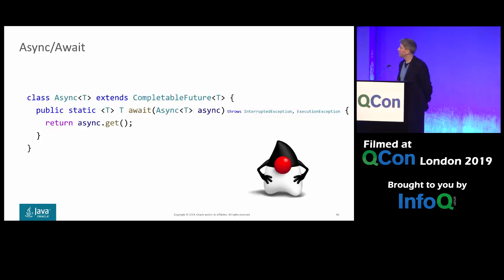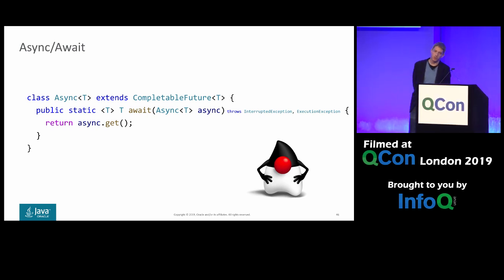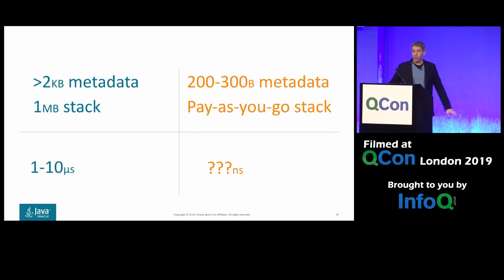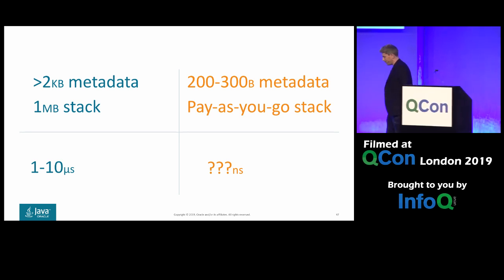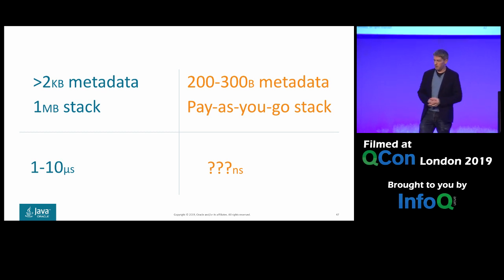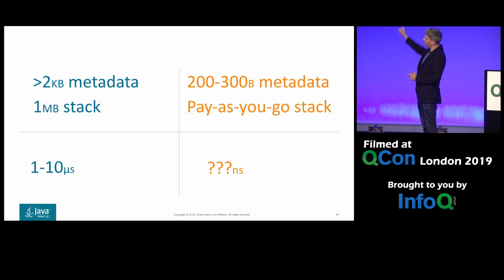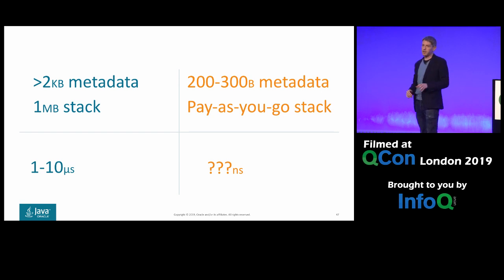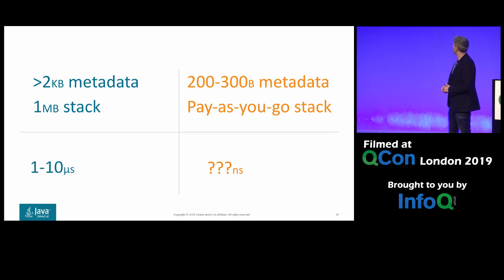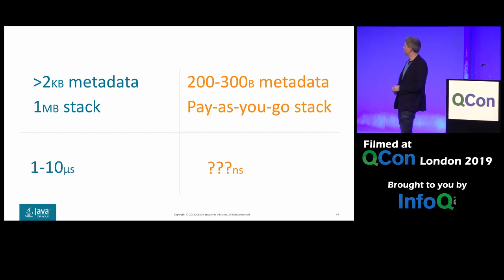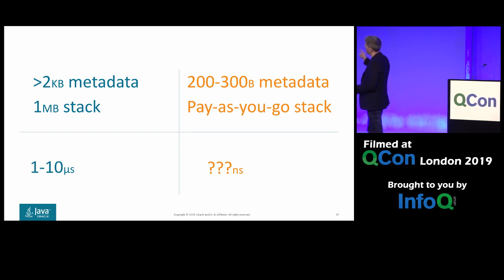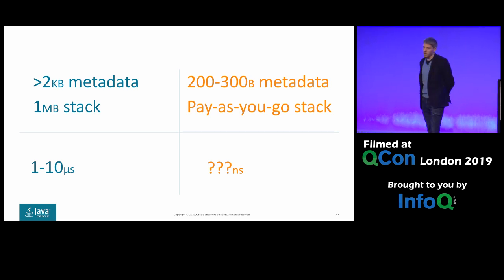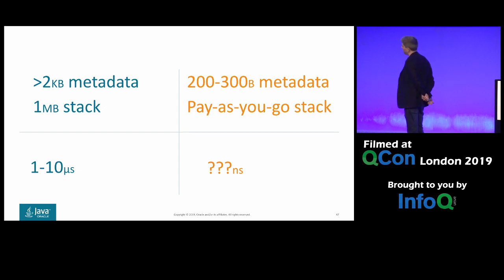The next time the scheduler runs that task, it continues your code from where it last left off. And if you love async/await, this would be the entire implementation of async/await on top of this — it's strictly stronger than async/await. But all this is worthwhile only if we do better than the OS. Old heavyweight JDK threads have about 2 KB of metadata plus 1 MB of stack by default. Fibers currently have only 200–300 bytes of metadata, and the stack is pay-as-you-go — it can grow and shrink. For task switching, kernel threads take 1–10 microseconds; fiber switching performance is still being worked on but is expected to be much lower.